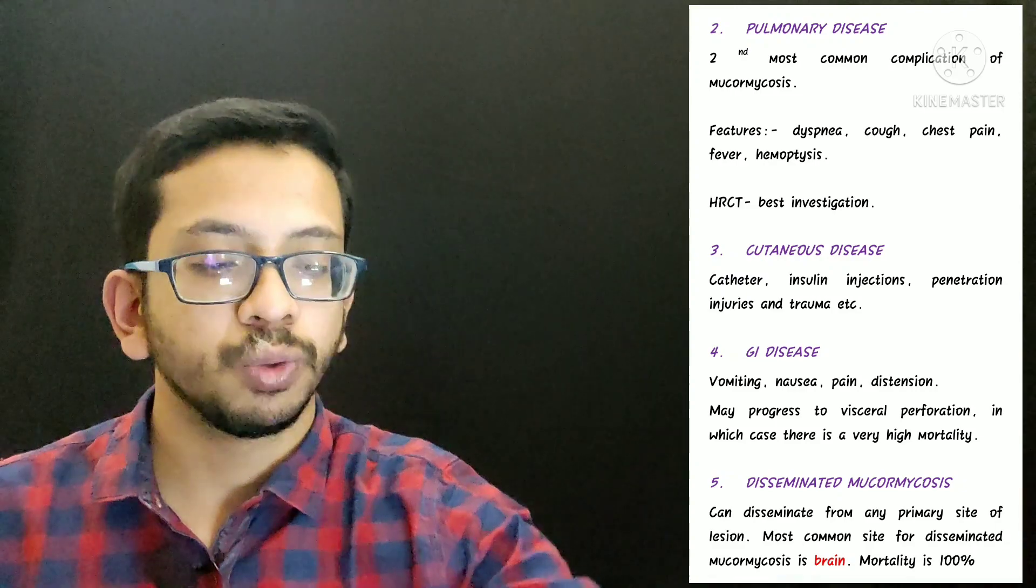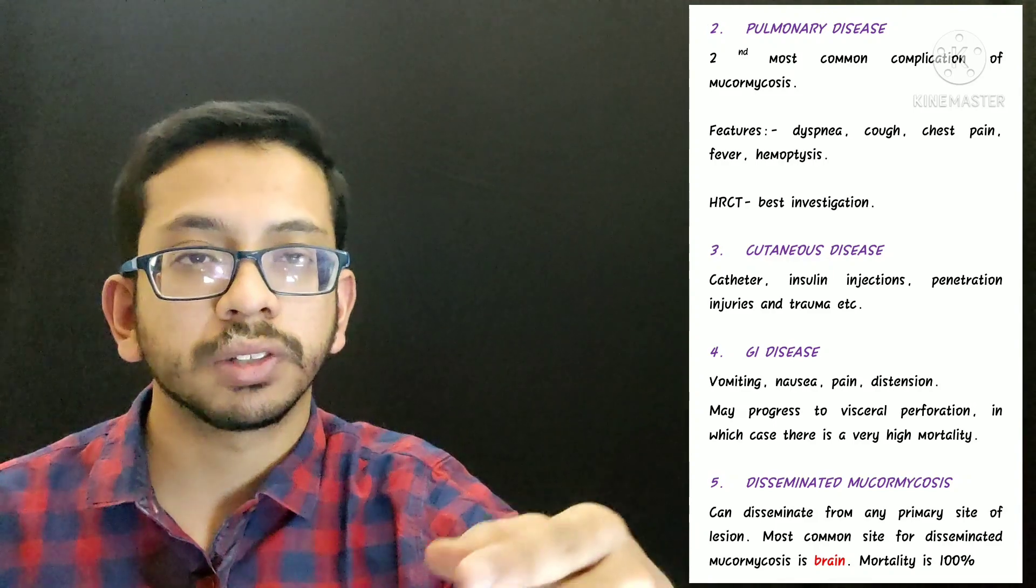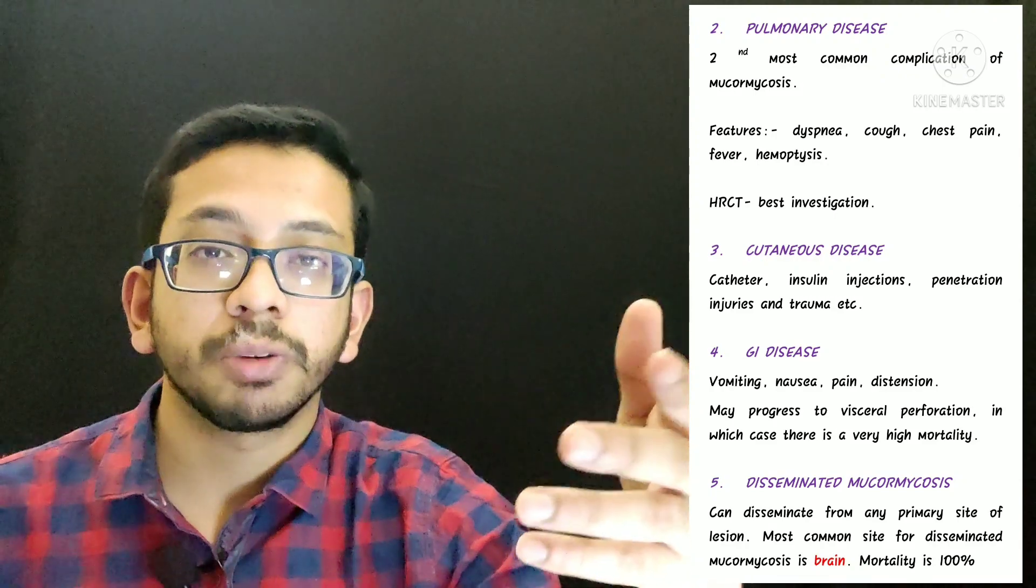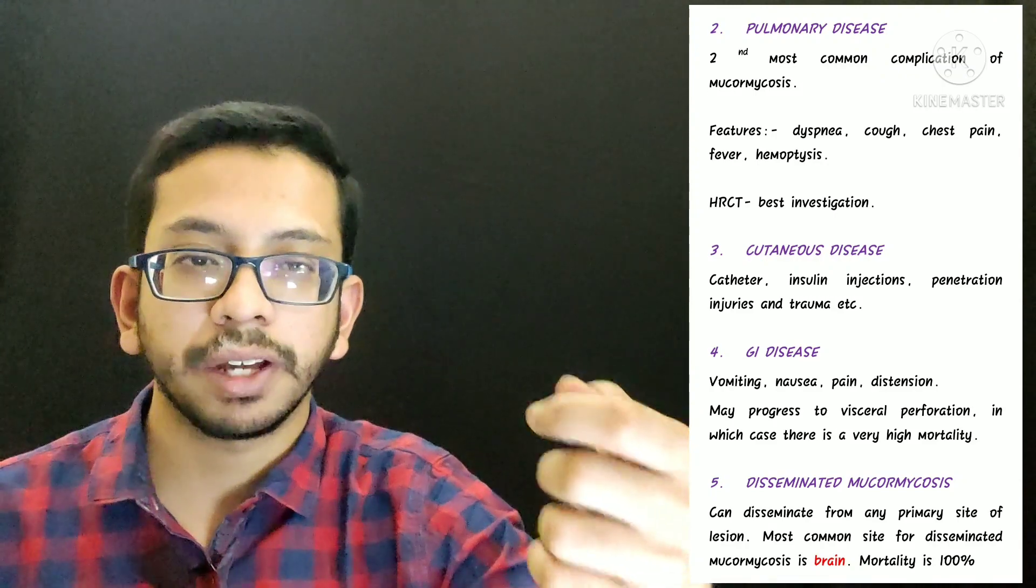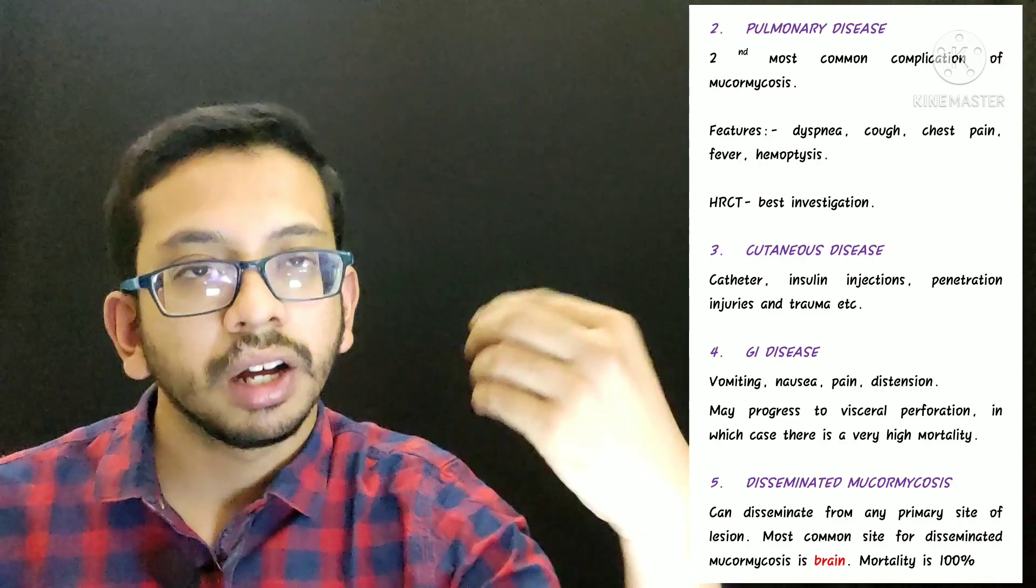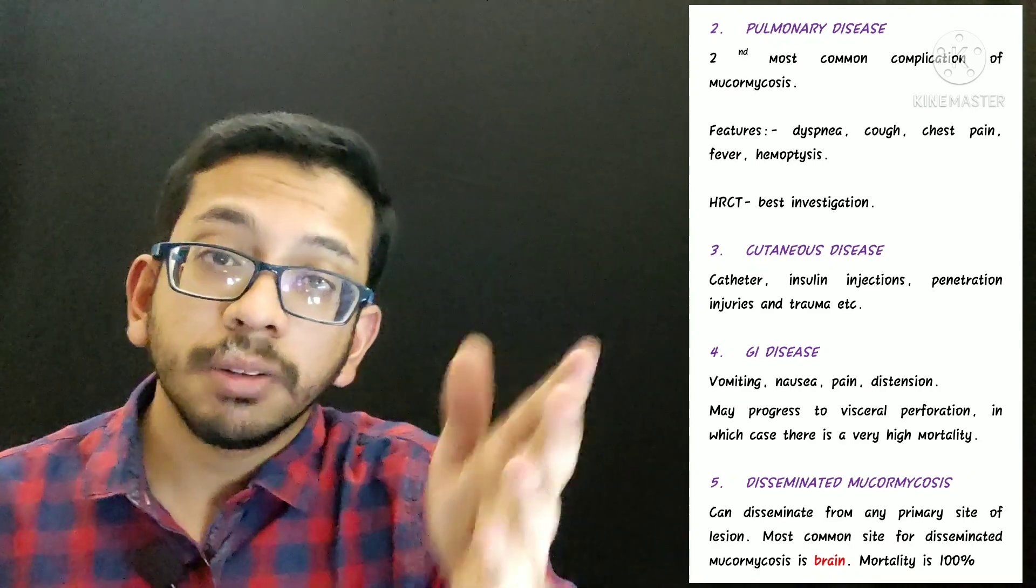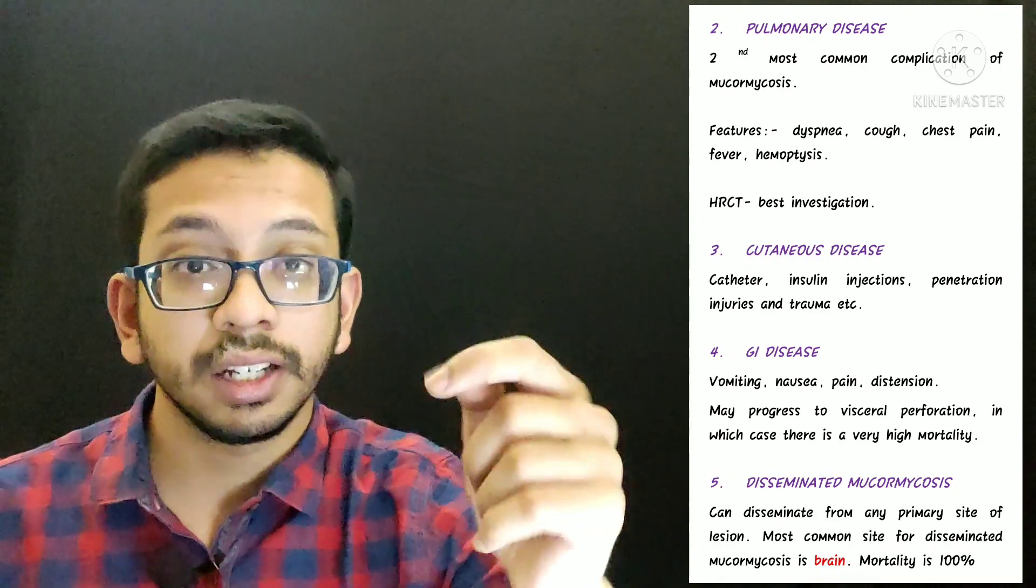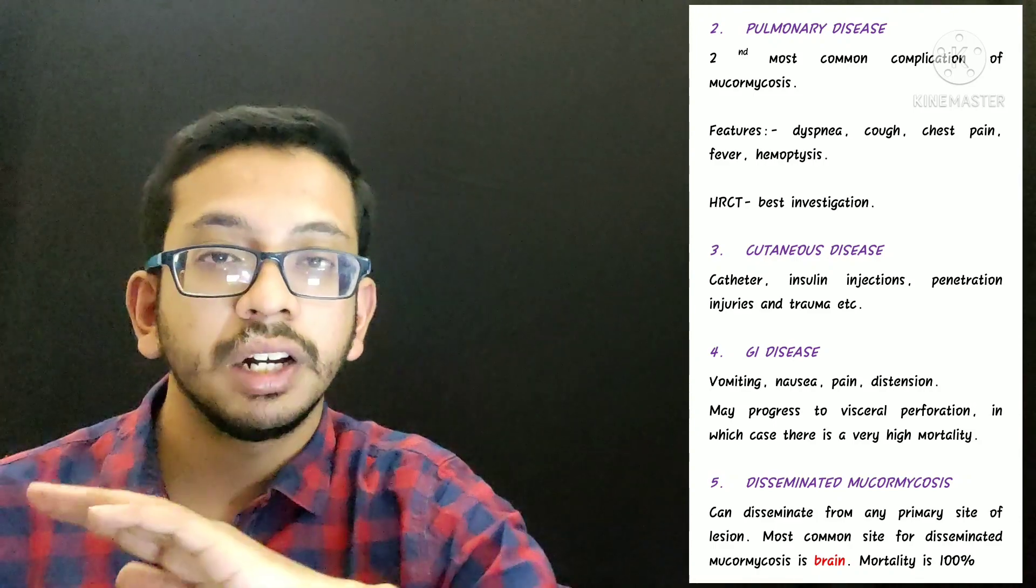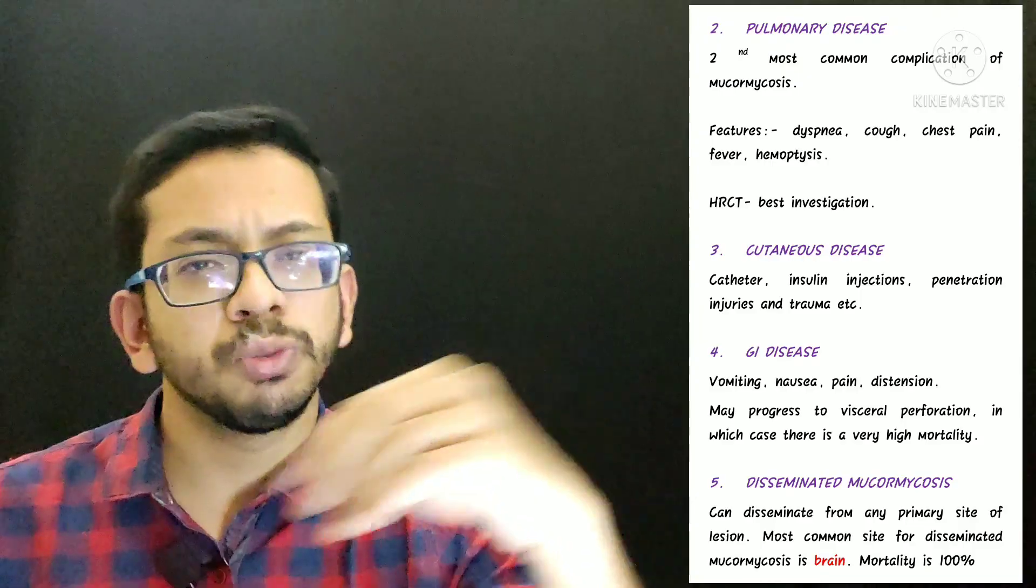Now there are other types of disease caused by mucormycosis: pulmonary disease, cutaneous disease, GI disease, and disseminated mucormycosis. Pulmonary is the second most common form. Just one thing which is very important: disseminated mucormycosis. As we have already read, disseminated mucormycosis is caused due to prophylaxis by itraconazole or voriconazole, or if you give deferoxamine to chelate the iron. What is the most common location for disseminated mucormycosis? It is brain. And if you develop disseminated mucormycosis, the mortality is 100%, which means that if you develop disseminated mucormycosis, then you won't be able to make it at all.